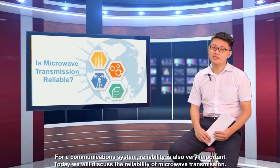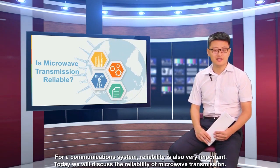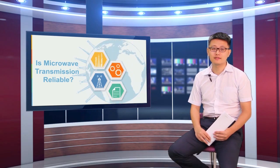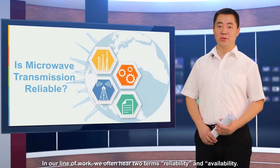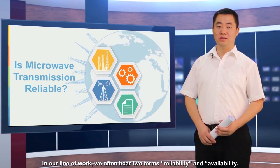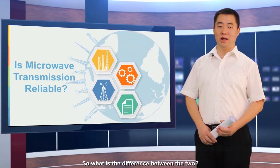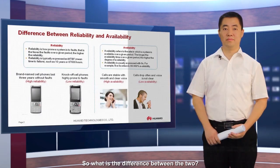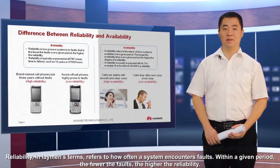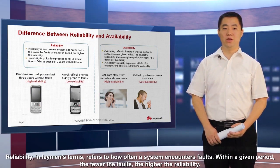Today, we will discuss the reliability of microwave transmission. In our line of work, we often hear two terms: reliability and availability. So what is the difference between the two? Reliability, in layman's terms, refers to how often a system encounters faults. Within a given period, the fewer the faults, the higher the reliability.